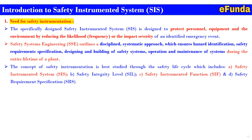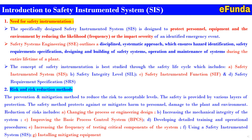The concept of the safety instrumented system is studied through the safety life cycle, which includes the SIS, safety integrity level (SIL), safety instrumented function (SIF), safety requirement specification (SRS), risk and risk reduction methods, and prevention and mitigation methods to reduce risk to an acceptable level. Risk reduction includes changing the process or design engineering, increasing the mechanical integrity of the system, improving the basic process control system (BPCS), developing detailed training and operational procedures, increasing the frequency of testing of critical components, and using a safety instrumented system and installing mitigating equipment.